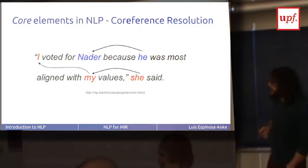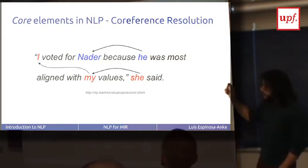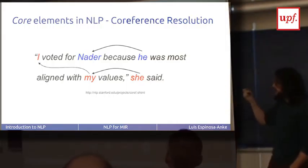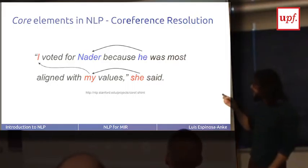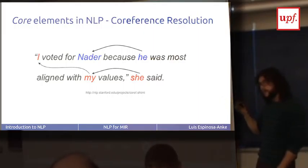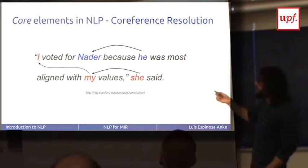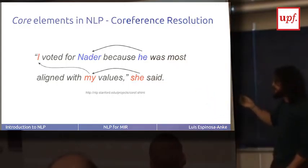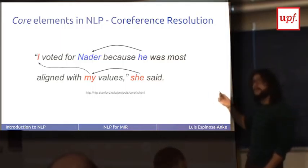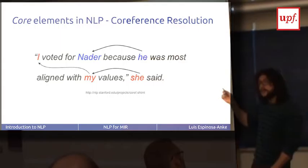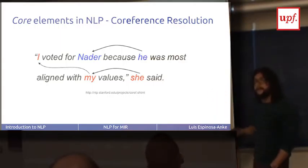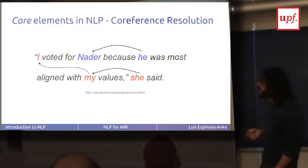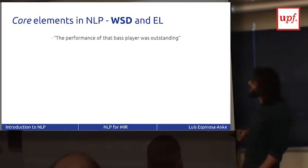Another important task at the discourse level is coreference resolution. Your algorithm not only has to know the morphology, syntax, semantics, and named entities word by word, but also keep track of mentions to entities already referenced — called anaphora. In 'I voted for Nader because he was most aligned with my values, she said,' your algorithm has to know that 'she,' 'my,' and 'I' refer to the same entity, because a later mention might contain important information you don't want to miss. This is one of the most difficult tasks in NLP.